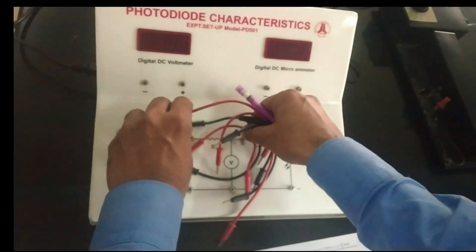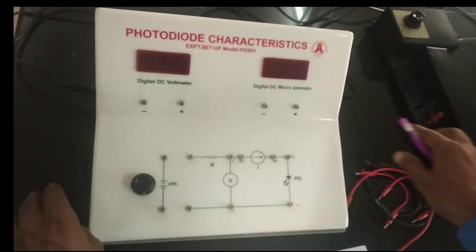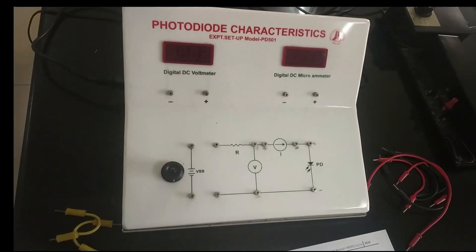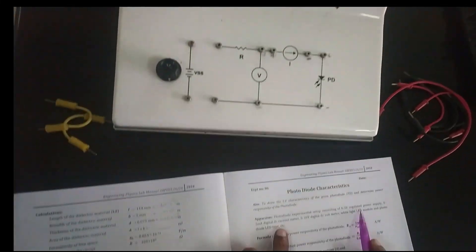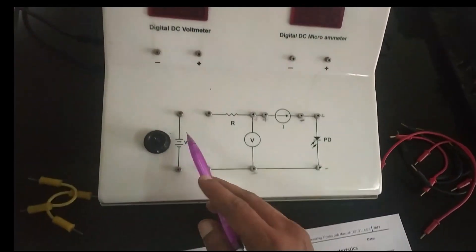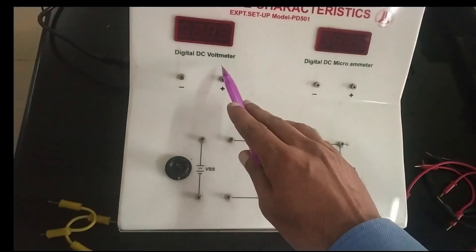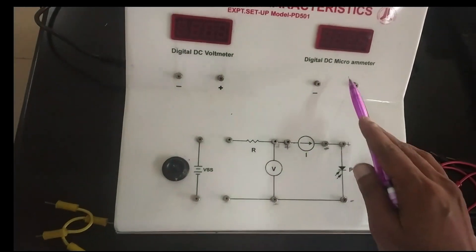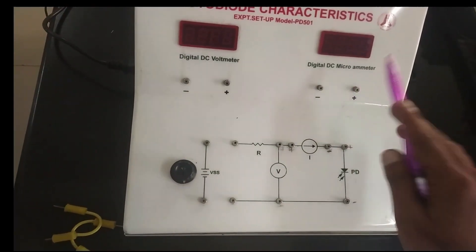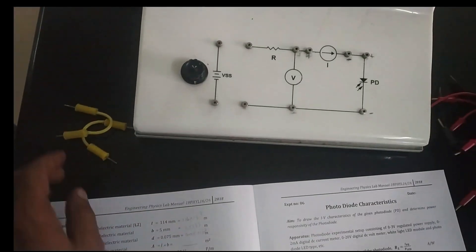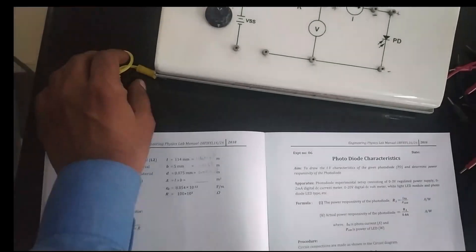The apparatus required for this experiment are a photodiode exciter setup, which consists of one regulated power supply, one DC voltmeter, one DC micro ammeter. We also need patch cords for the connection and one LED.